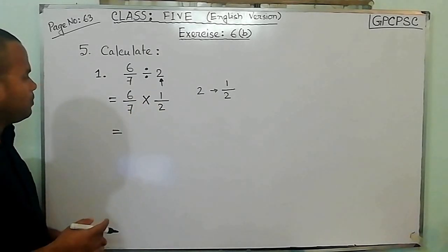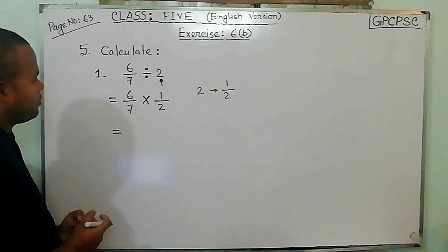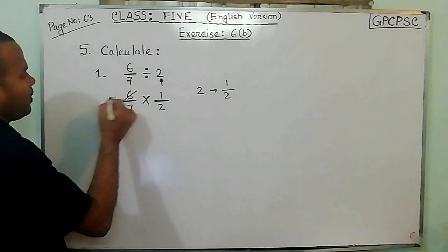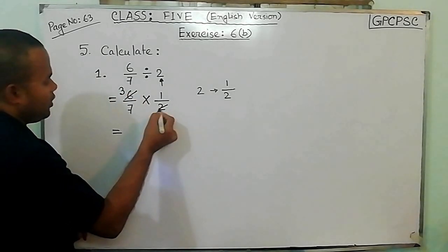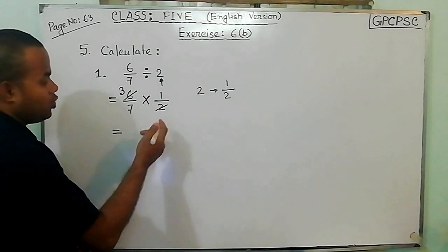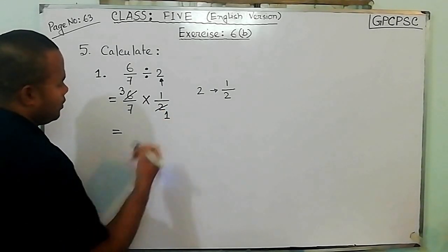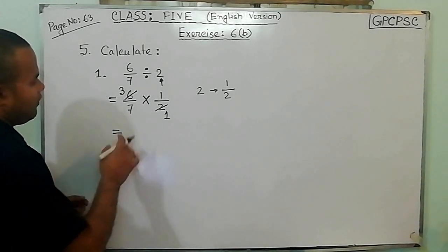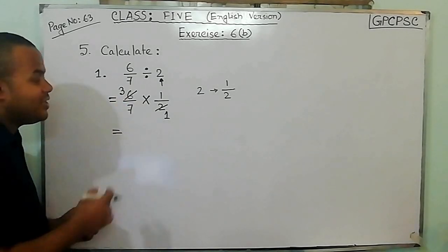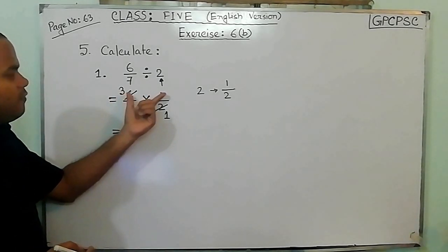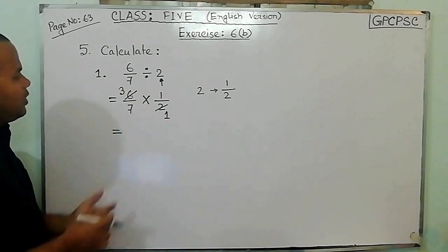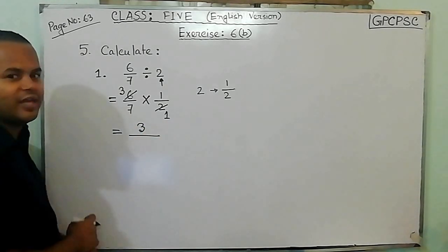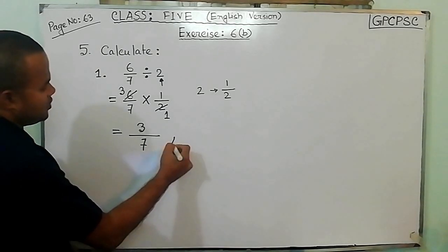So that is division into multiplication. Now just divide 6 and 2 — you can divide by the same number, that is 2. You can divide 6 here. If you divide 6 by 2, then we have 3. And if we divide 2 by 2, then we have 1. Now we are out of multiplication. So you have to multiply the top numbers: 3 times 1, that is 3. And 7 times 1, that is 7. So that is the answer.